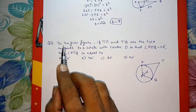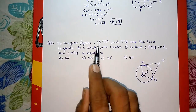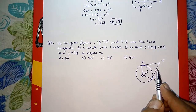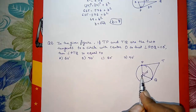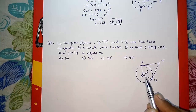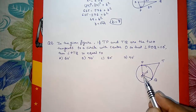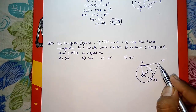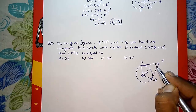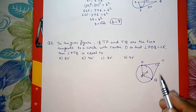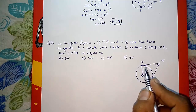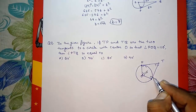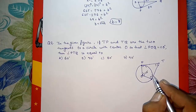Now question number 2. In the given figure, TP and TQ are two tangents to a circle with center O. We are given that angle POQ is 110 degrees and we need to find angle PTQ. We can see this forms a quadrilateral, so the sum of all four angles is 360 degrees. The tangents are always perpendicular to the radius, so angles at P and Q are each 90 degrees.